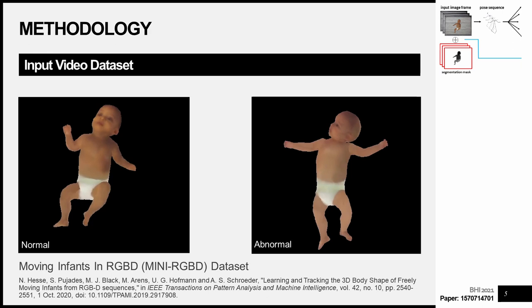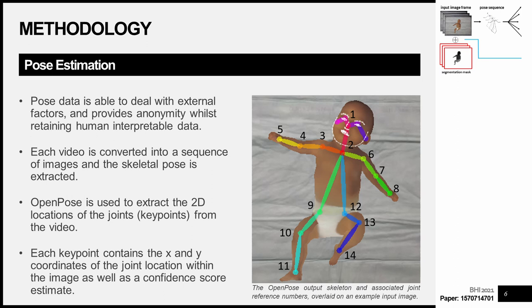The first step in extracting meaningful motion features is to use pose estimation to extract pose data from the input video. Pose data is able to deal with external factors such as parental intervention or clinicians coming into shot, and it's also able to provide anonymity whilst retaining human-interpretable data. Each video from the dataset is converted into a sequence of images and we use the OpenPose framework to extract 2D joint locations. Each keypoint contains the x and y coordinates of the joint location within the image as well as a confidence score estimate. In the image on the right we can see an example of the output skeleton produced by OpenPose.